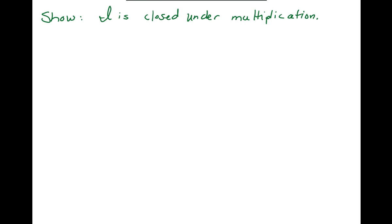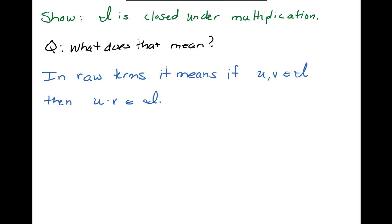So what I'm supposed to show is that I is closed under multiplication. So what does that mean? That's the first question. Well in raw terms it means that if I chose two random elements from the set I, that their product remains in the set I. So see how useful it is to actually talk about a set.